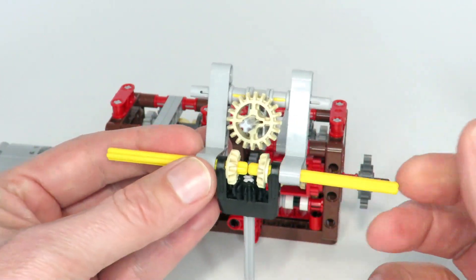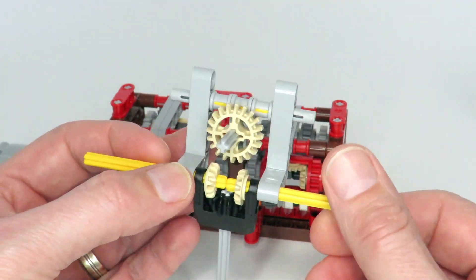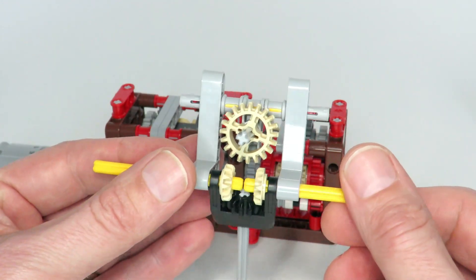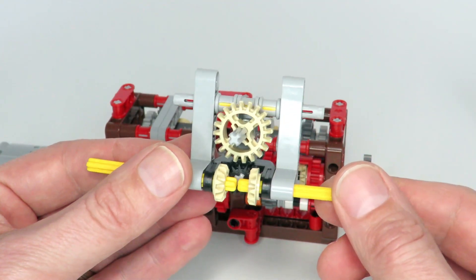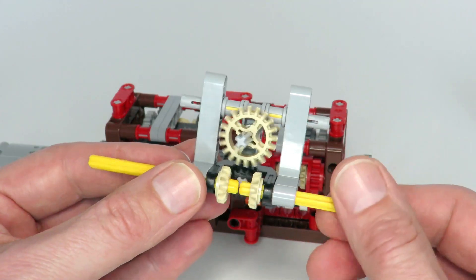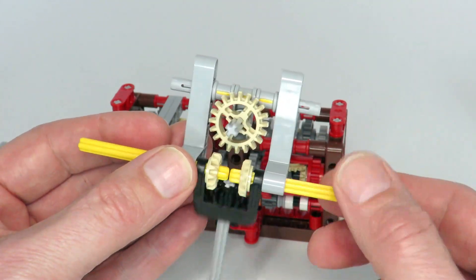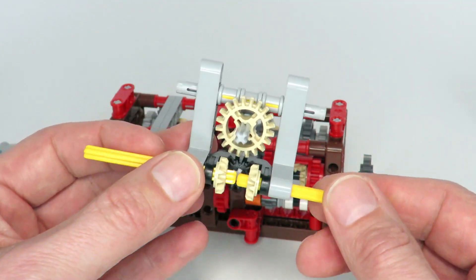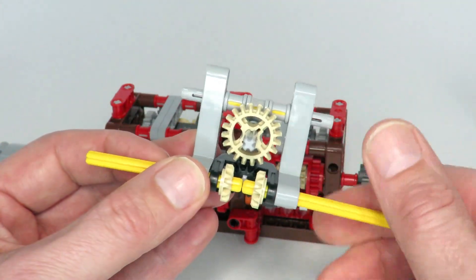So here's a quick implementation of that idea. Again we've got that differential kind of structure, we've got our input and output, and as we rotate the input and put some load on the output we can see that part rotate around and now driving that gear at the top.